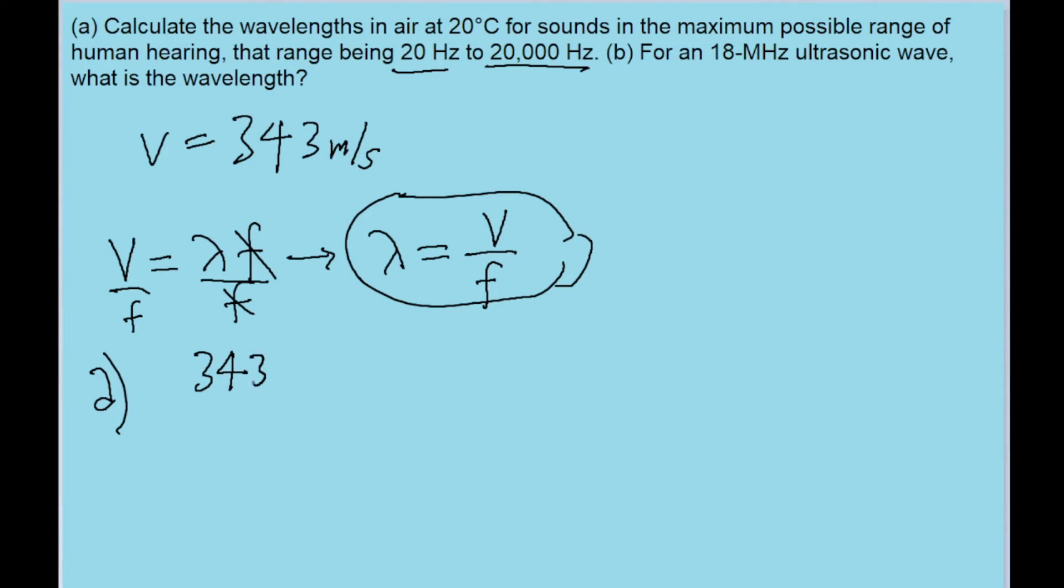Let's put in 343 meters per second for V divided by a frequency of 20 hertz. And if we put this into our calculator, then we find a wavelength of approximately 17 meters.